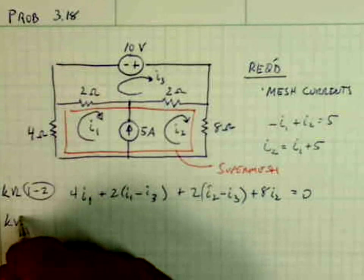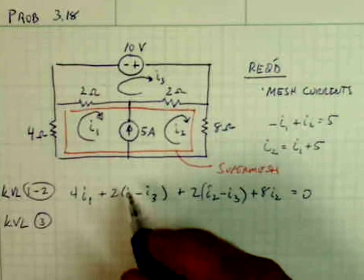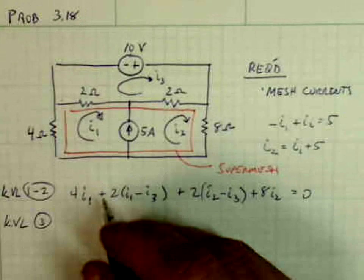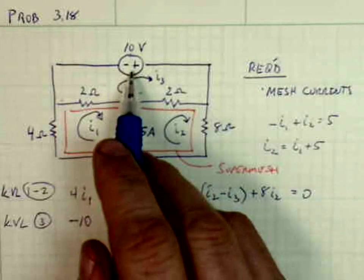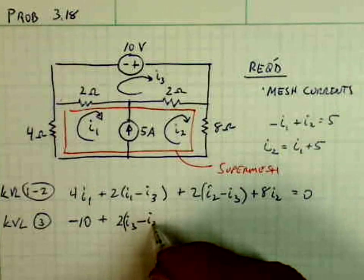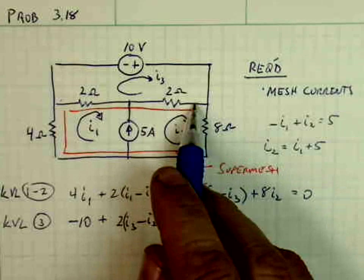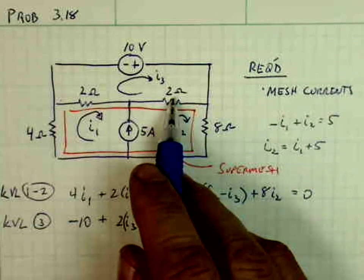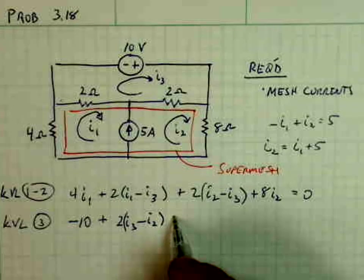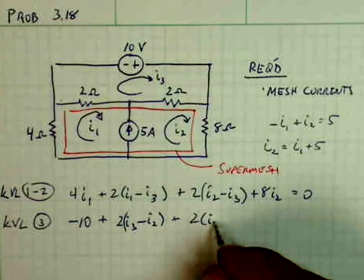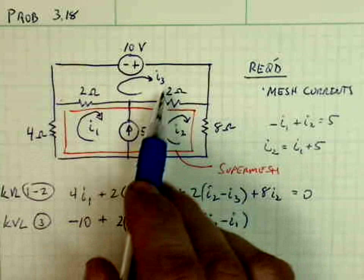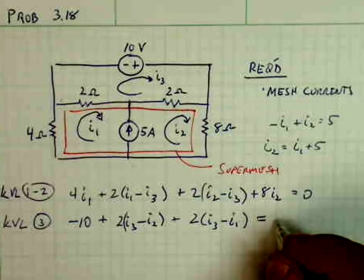And then I'll do KVL around the third mesh, which is up on top, and we'll start again in the lower left and go clockwise. So it's minus 10, which is the voltage source here, plus 2 times (I3 minus I2), which is the voltage drop from the right side of this 2 ohm resistor. I3 minus I2 plus 2 times (I3 minus I1), which is the voltage drop across this resistor as I move clockwise, and that's equal to 0.